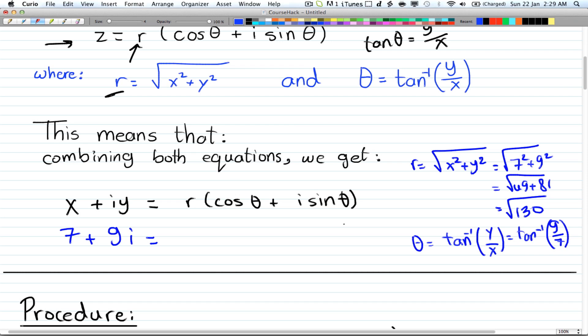Again, I'm not sure if these values will ever work, but I'm just using it as an example. So we have the square root of 130 times [cos(tan^(-1)(9/7)) + i sin(tan^(-1)(9/7))].